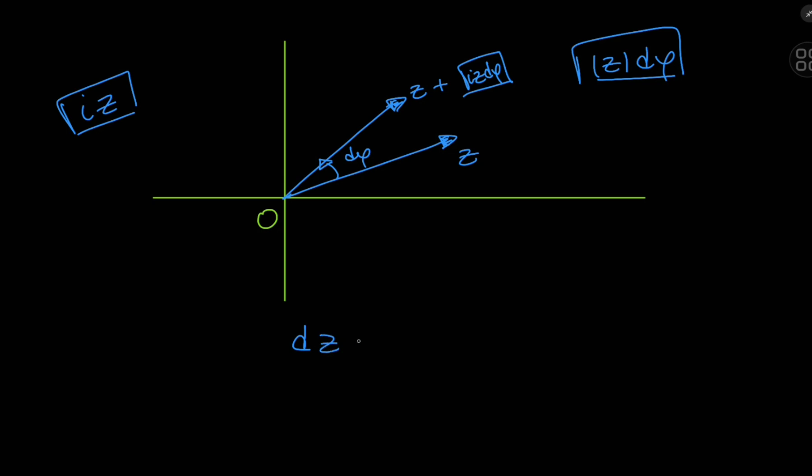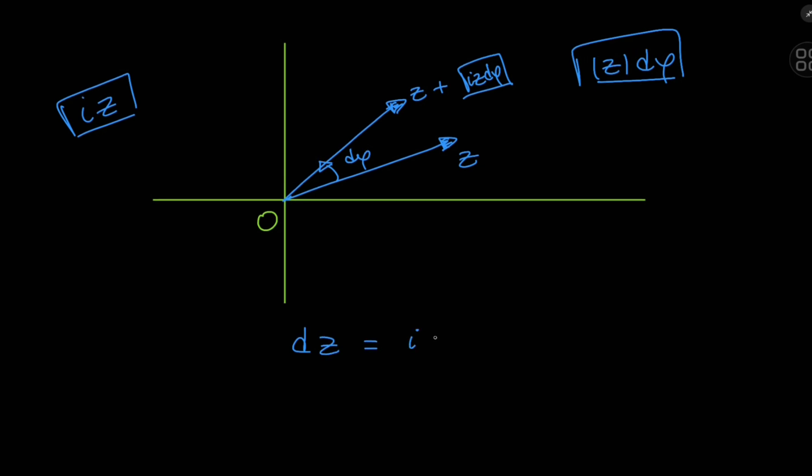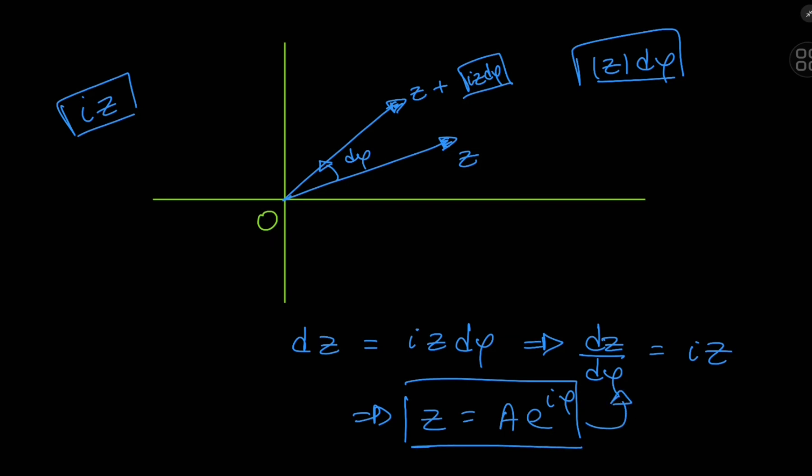So the incremental vector dz equals i z times d phi, which implies that we have this interesting looking differential equation that is dz by d phi equal to i times z. And we can solve this equation quite easily, I mean it's a no brainer, that z should be some constant a times e to the i phi. This is the function that satisfies the given differential equation.